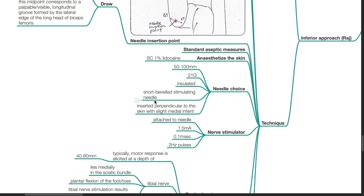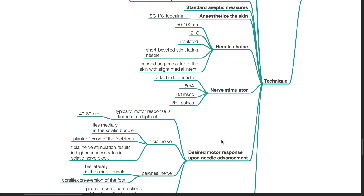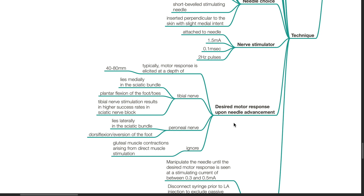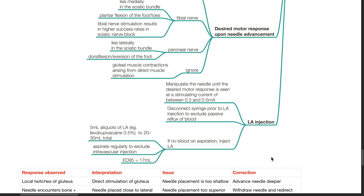Attach the nerve stimulator: setting at 1.5 mA, 0.1 ms, 2 Hz pulses. Typically motor response is elicited at a depth of 40–80 mm. Plantar flexion of the foot or toes occurs with tibial nerve stimulation, which results in higher success rates. The peroneal nerve lies laterally in the sciatic bundle; stimulation results in dorsiflexion or eversion of the foot. Ignore gluteal muscle contractions arising from direct muscle stimulation. Proceed with LA injection as described in LeBart's approach.